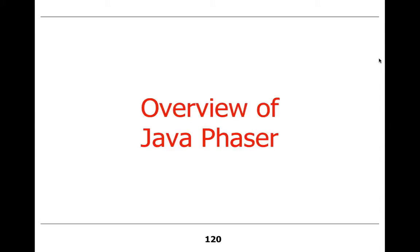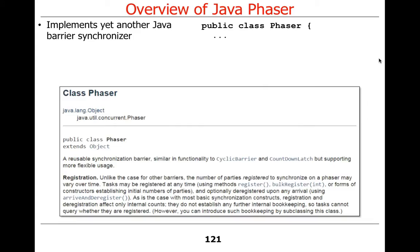What we're going to do today is wrap up our discussion of Java barrier synchronization mechanisms. We talked about the countdown latch, which is a fairly simple mechanism, and cyclic barriers. Countdown latches allow you to do one-shot things with a fixed number of parties. Cyclic barriers let you do cyclic things with a fixed number of parties. Now we're going to talk about Java phaser, which is a much more powerful mechanism than either of the other two.